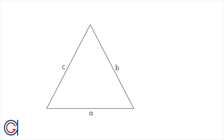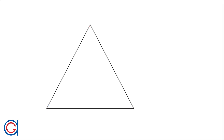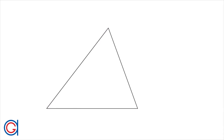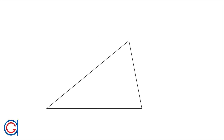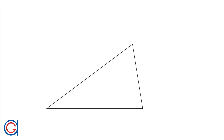So to start off, a triangle is a closed polygon with 3 sides and 3 angles. One very important property of every triangle is that its 3 angles always add up to 180 degrees.